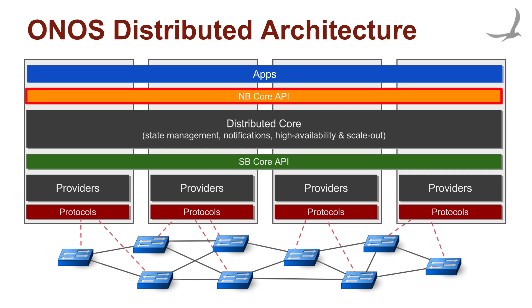On the north-facing side, the ONOS core exposes a set of abstractions to applications and additional network services via its northbound API. These abstractions provide a range of access to network information, starting from the usual low-level topology abstractions such as devices, links and hosts, to higher-level abstractions such as the network topology graph. Similarly, they provide a range of abstractions for affecting the network state via flow objective programming and intent-based programming.